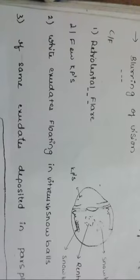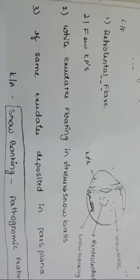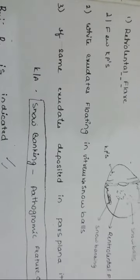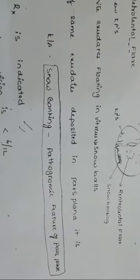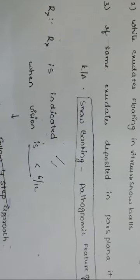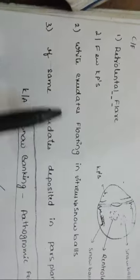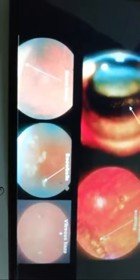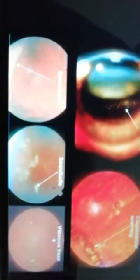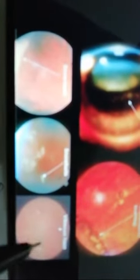There are also white exudates floating in the vitreous like snowballs — these are called snowballs. Looking at the image, these are the snowballs present and floating in the vitreous humor.